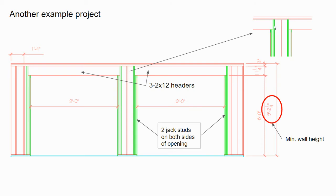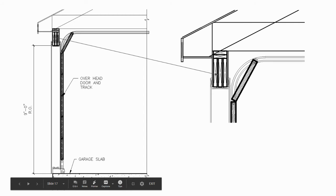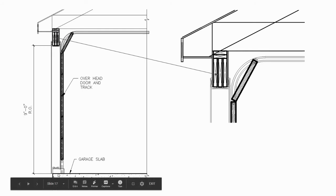This is a close-up of the jack studs and king studs around the two openings. In section, the slab is dropped from the top of the concrete wall; measurement from the top of slab to the bottom of the header is 9 feet. The top of wall height is the three 2x12s plus 3-inch top plate, making 9 feet 2¼ inches from the top of slab. The section also shows the door track for the overhead door on the inside of the garage.